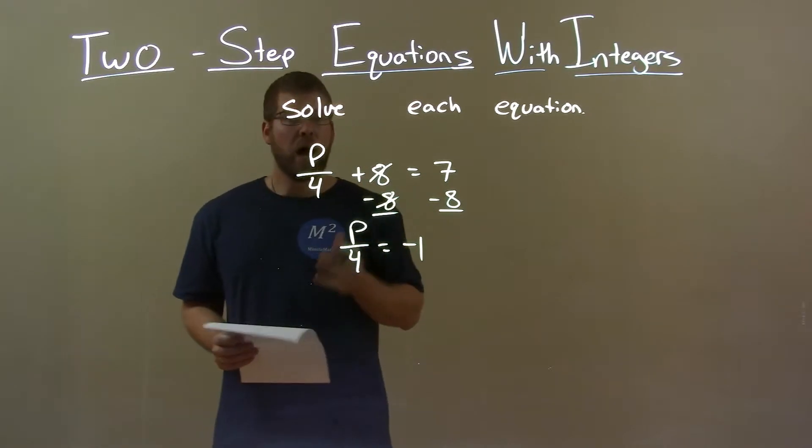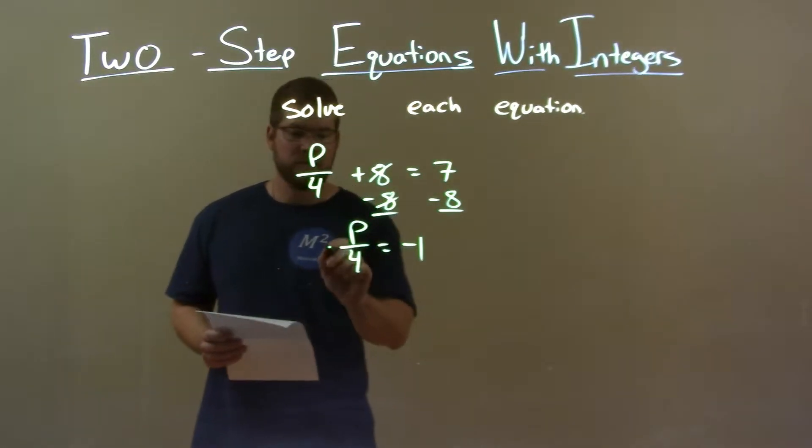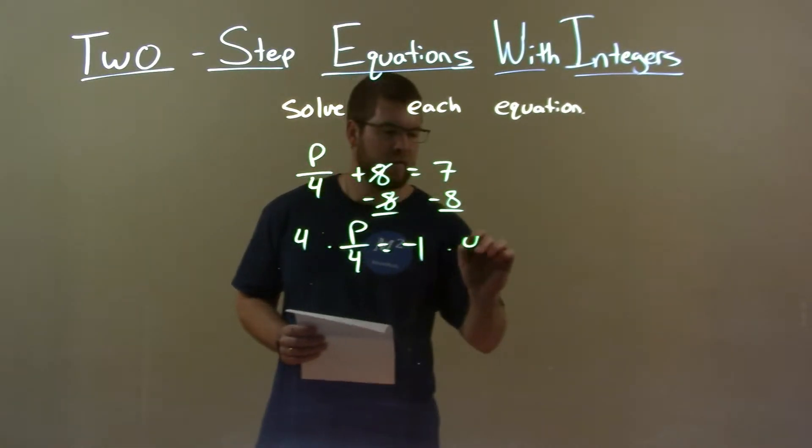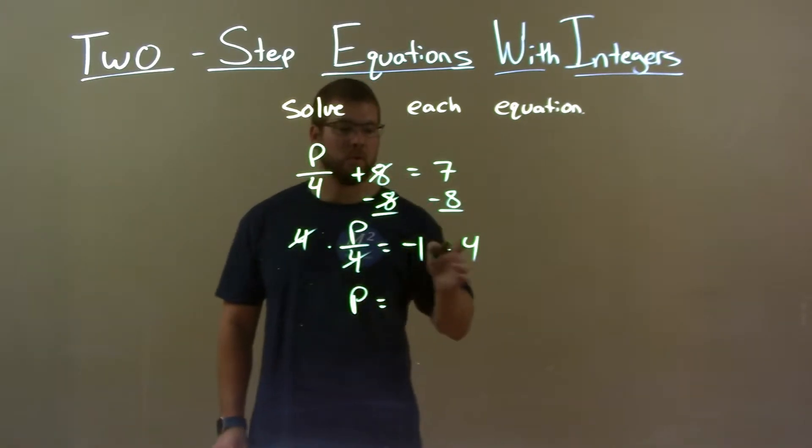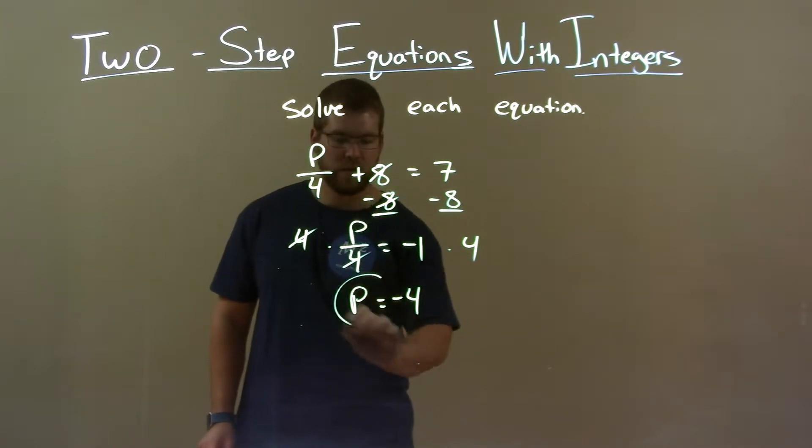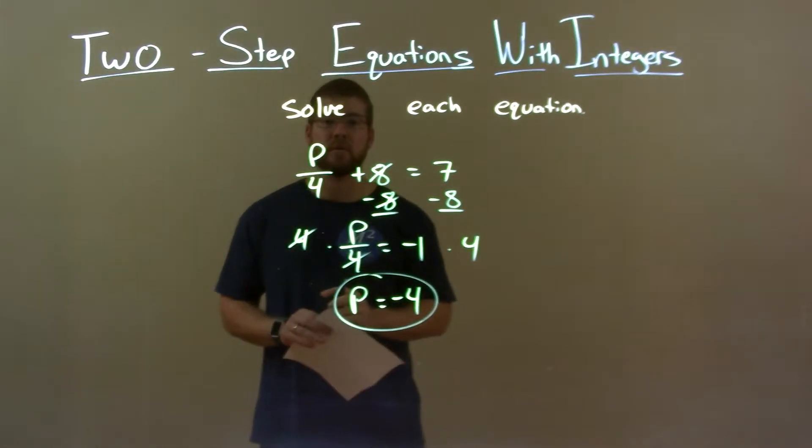Divided by 4, opposite of division, multiplication. Multiply both sides by 4. 4's cancel on the left, giving me p by itself and negative 1 times 4 is a negative 4. So our final answer here is p equals a negative 4.